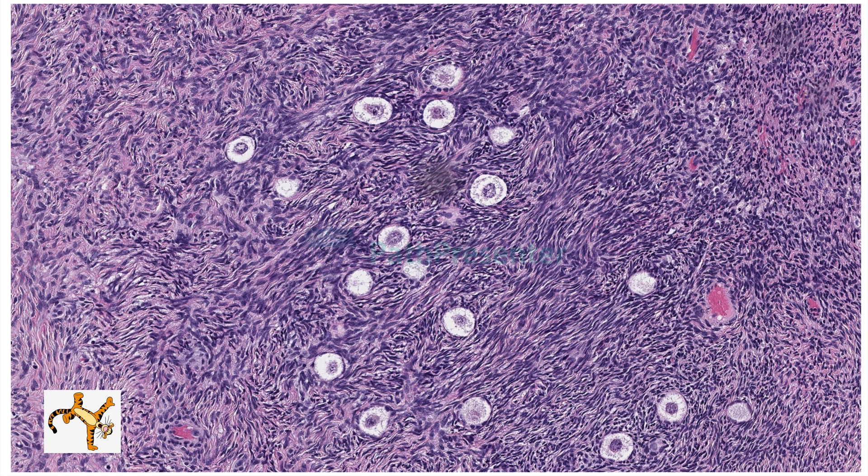These are primary follicles, which appear at the third month of fetal development. This is also an excellent picture to point out ovarian type stroma, which is composed of spindled cells showing a storiform or cartwheel pattern — I put a picture of Tigger doing a cartwheel so you'll remember what that means.